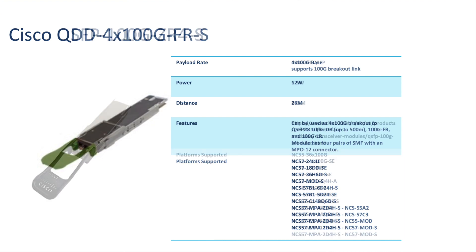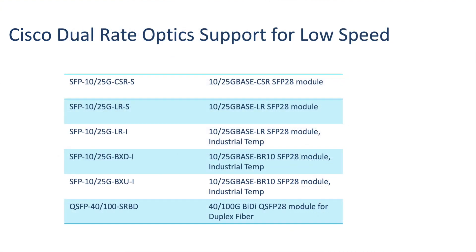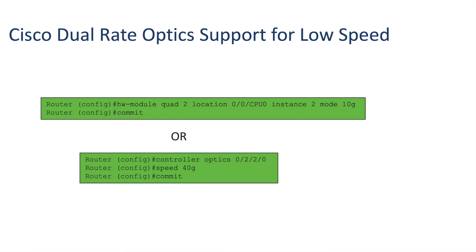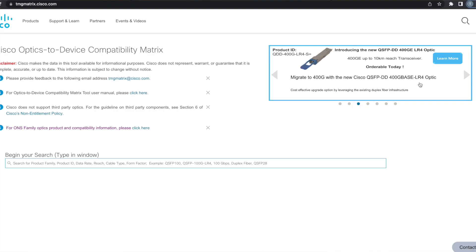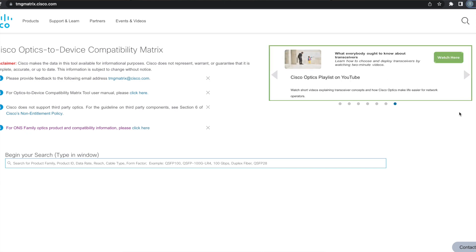We also extend the support for QSFP 100GB ZR4-S across other platforms in the portfolio. With this release, the following dual-rate optics can now be configured for their lower speeds along with the higher speeds. You can now configure the lower speed using the simple CLI keyword — speed or quad — and change between higher and lower speeds without changing the optical module. Earlier, by default, only the higher port speed was available. For a complete list of optics supported on the portfolio, please visit our TMG page. If you still need specific information, please get in touch with us.